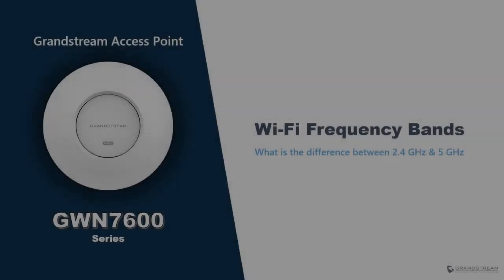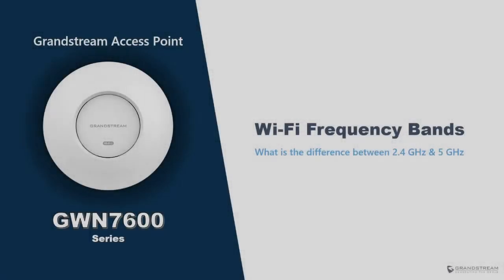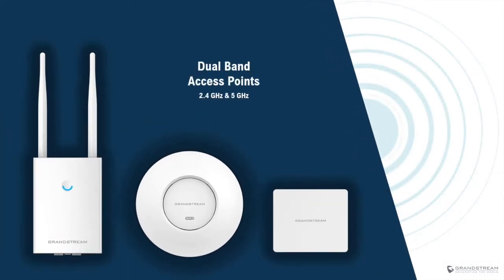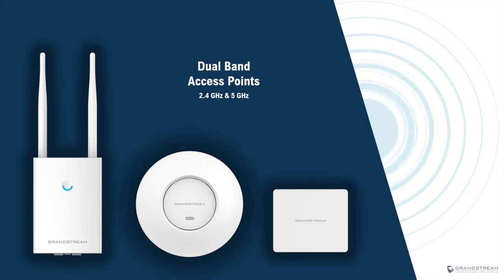Hello and welcome to another video about the Grandstream Access Point GWN 7600 series. In this video I will review the wireless frequency bands 2.4 gigahertz and 5 gigahertz, provide a comparison between their features and applications, and show you how to configure frequency bands using the web interface of GWN access points. It is worth mentioning that Grandstream access points support dual-band Wi-Fi to offer maximum flexibility when setting up your Wi-Fi network.